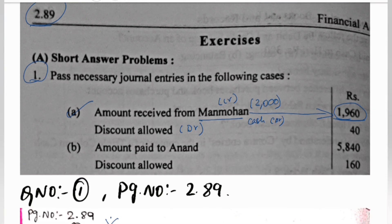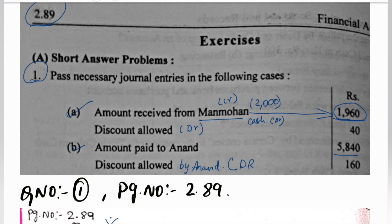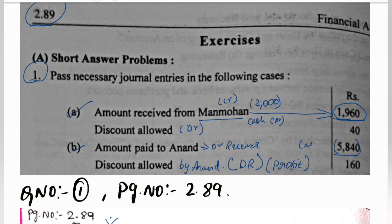Next, we will look at the opposite: amount paid to Anandh, discount received. Here, discount allowed by Anandh — so discount received. Discount received is $160, which is profit or gain. Anandh is the receiver, so Anandh debit. We paid $5840. Cash goes out, so cash credit.